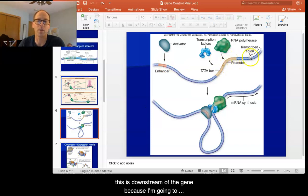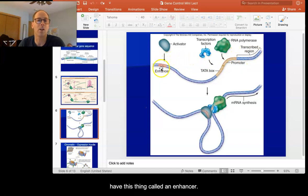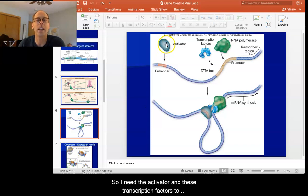The other thing that's different is in eukaryotic cells above the gene, and we call this being upstream of the gene. Here's my promoter. This is downstream of the gene because I'm going to read the gene in this direction. Upstream of the gene we have this thing called an enhancer, and this is a region of the DNA that a protein called an activator will attach to. So I need the activator and these transcription factors to actually turn on this gene.